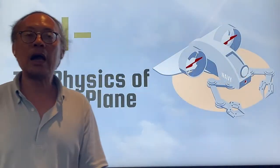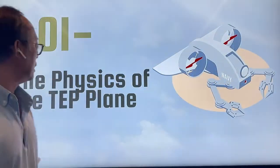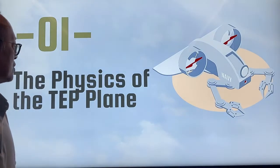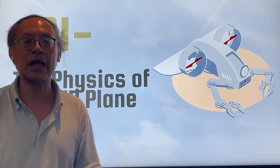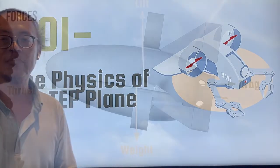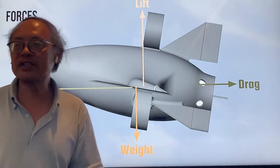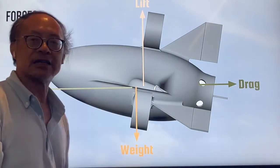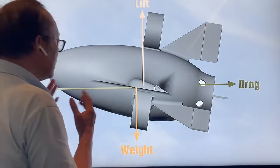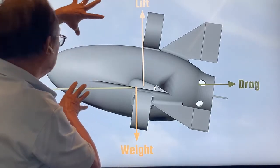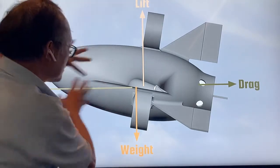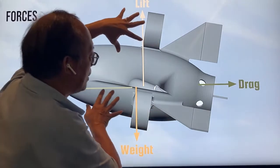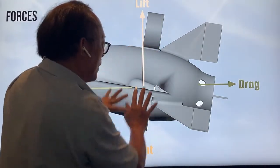Before I show you the simulation, I would like to tell you about the physics of the turbine electric propulsion airplane. There are four major forces acting on the airplane. First, we have to fight against gravity, and then we have to provide thrust, which is offered by the reaction of air being pushed by four propellers.